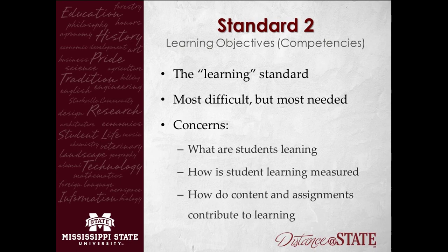Standard Two is Learning Objectives and Competencies — I call it the 'learning standard' because it's all about student learning. This one is probably the most difficult because every single one of the substandards is worth three points. That's because this is the basis for your entire course — from the overarching 'what are students learning and why are they taking this?' to what they're learning every time you ask them to read something or give a quiz. It concerns what students are learning, how that learning is measured, and how you're linking what you're teaching to what they should know.